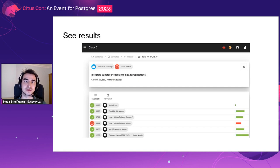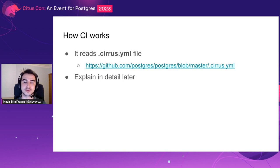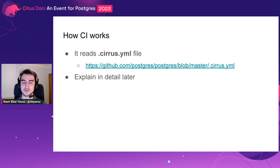After a trigger, you will see something similar to the Cirrus CI web view — that is what you will see when a CI run happens. This CI reads the Cirrus YAML file from your Postgres repository, which is located at the root path. You can follow the link to see how this file is implemented in Postgres. I will explain the details of this file later.